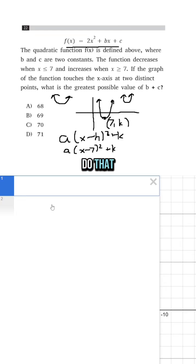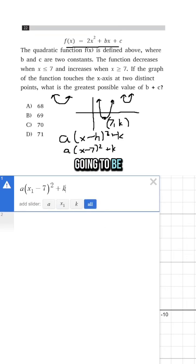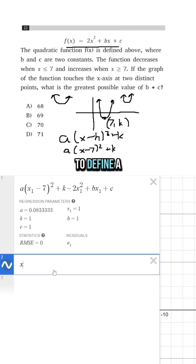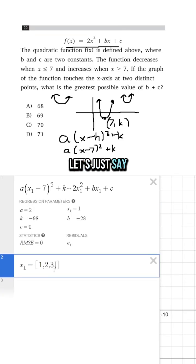All we have to do is go into Desmos and do that. So I'm going to write a times (x1 minus 7) squared plus k is going to be equivalent to 2x1 squared plus bx1 plus c. Now I need to define a list for x1. Let's just say 1, 2, 3, 4.